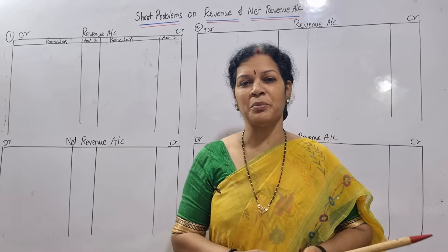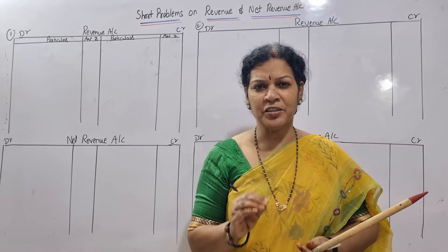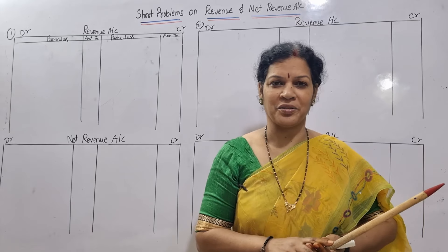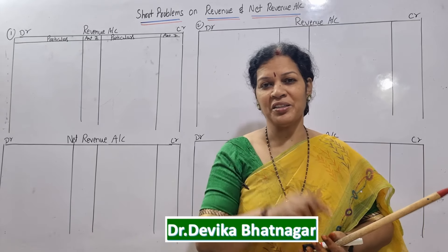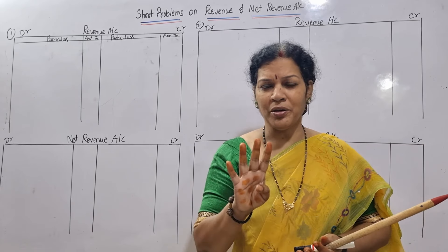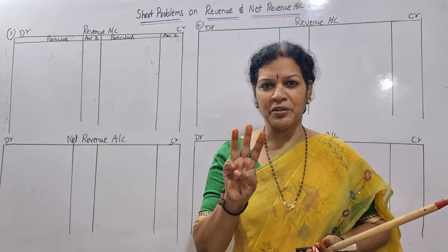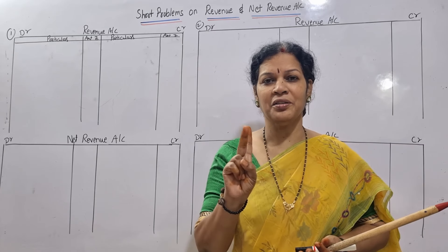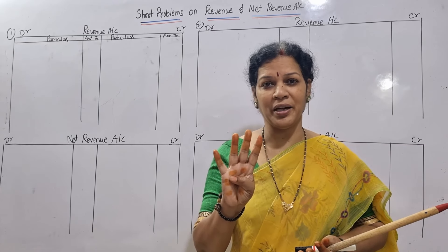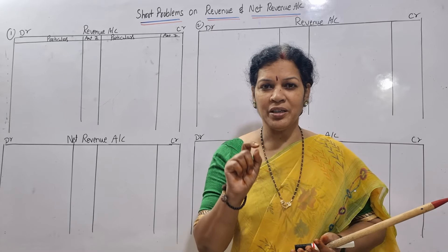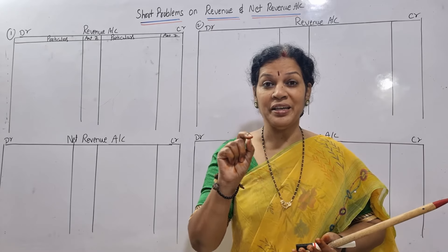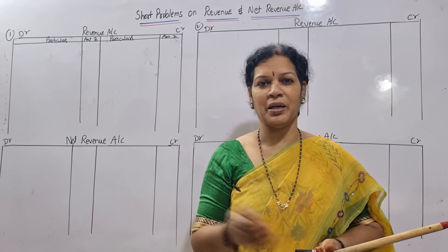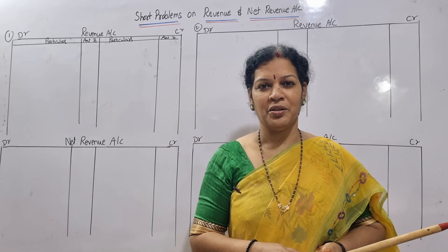Hello dear students, welcome to Devika's Commerce and Management Academy. Electricity company accounts - first we'll see the first method, that is final accounts and double accounting system. I already taught you four things we have to prepare: three accounts and one balance sheet. What are the three accounts? Revenue account, net revenue account, capital account, and balance sheet. Today we'll see only the revenue account and net revenue account.